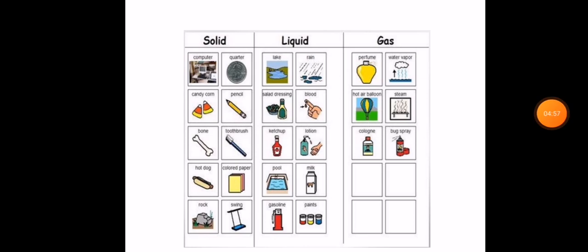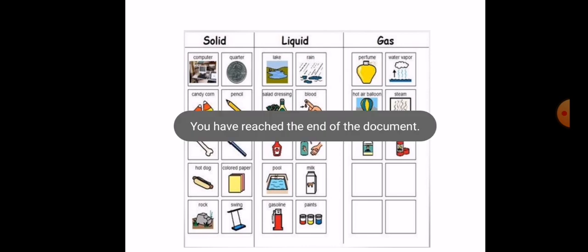To summarize: matter is everything around us that has mass and occupies space. Matter exists in three states or phases — solid, liquid, and gas. Solid has a fixed shape. Liquid does not have a fixed shape and takes the shape of its container. Gas also does not have a fixed shape and takes the shape of its container. We will study solid, liquid, and gas in more detail next lesson. See you next lesson!